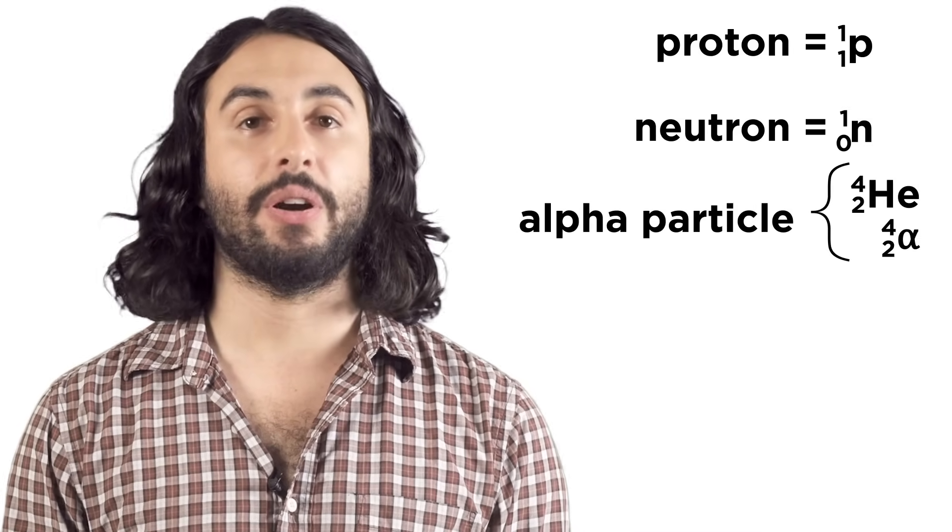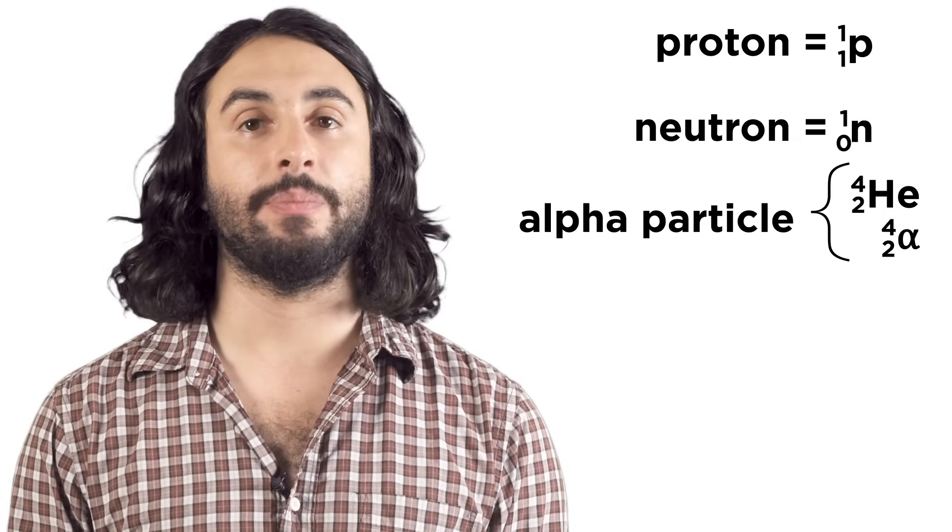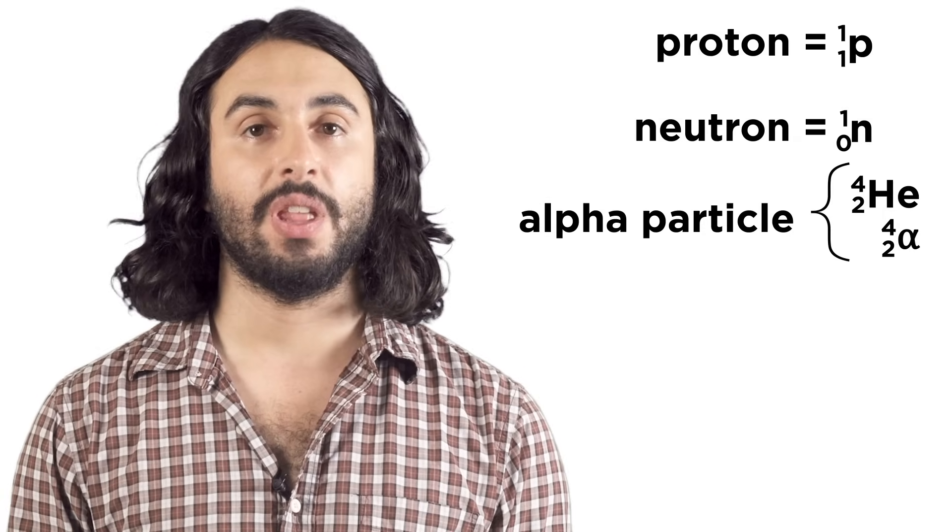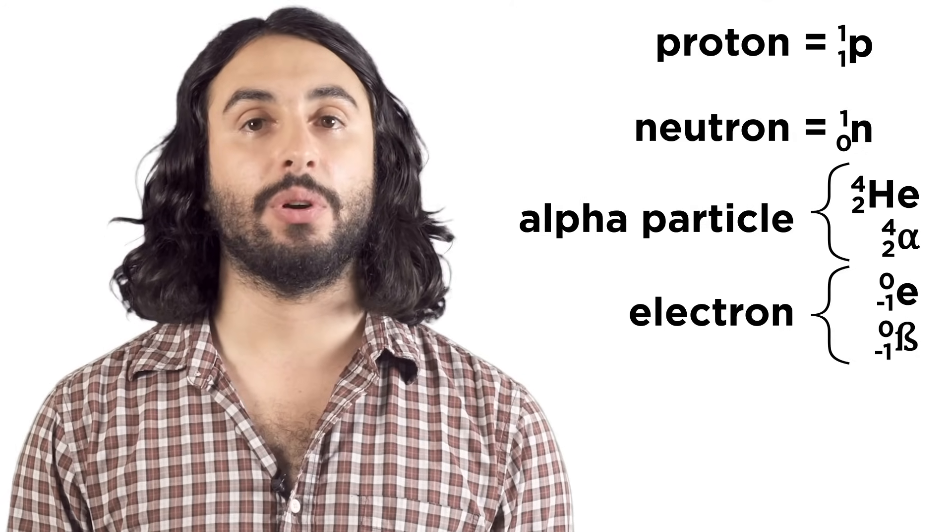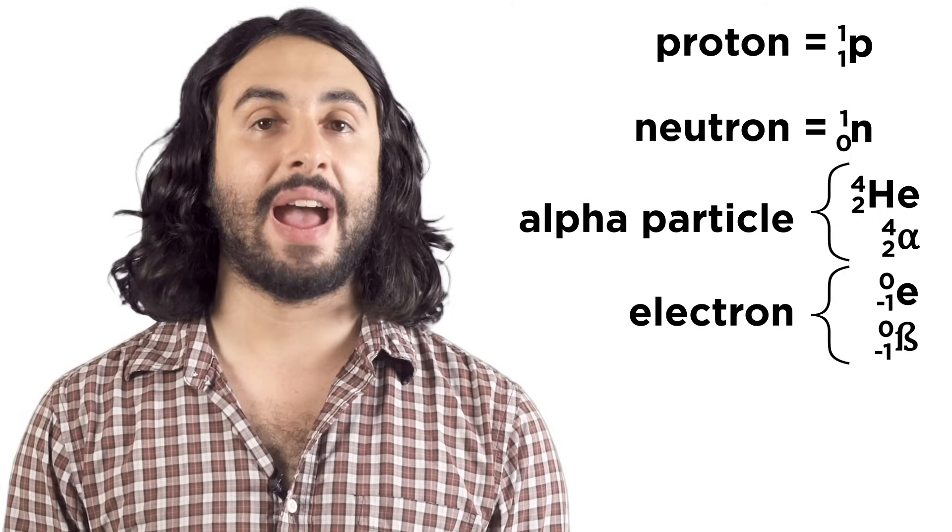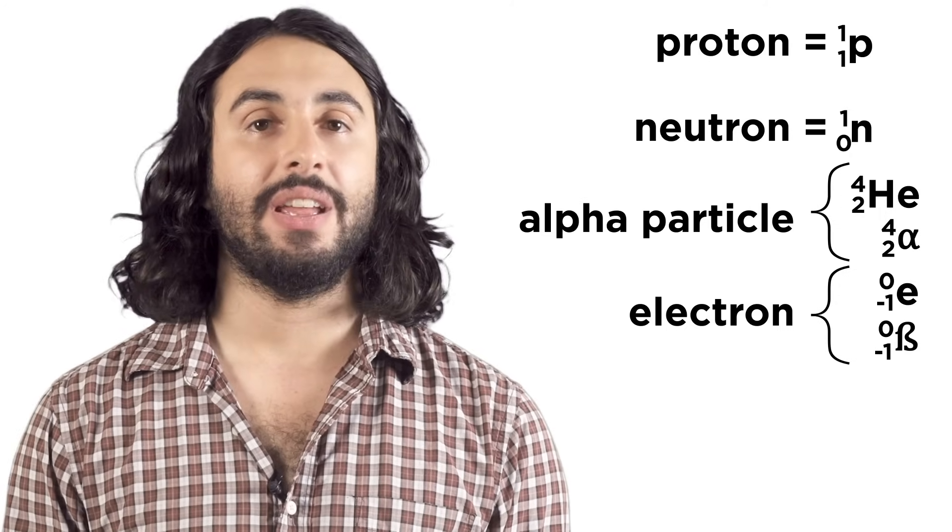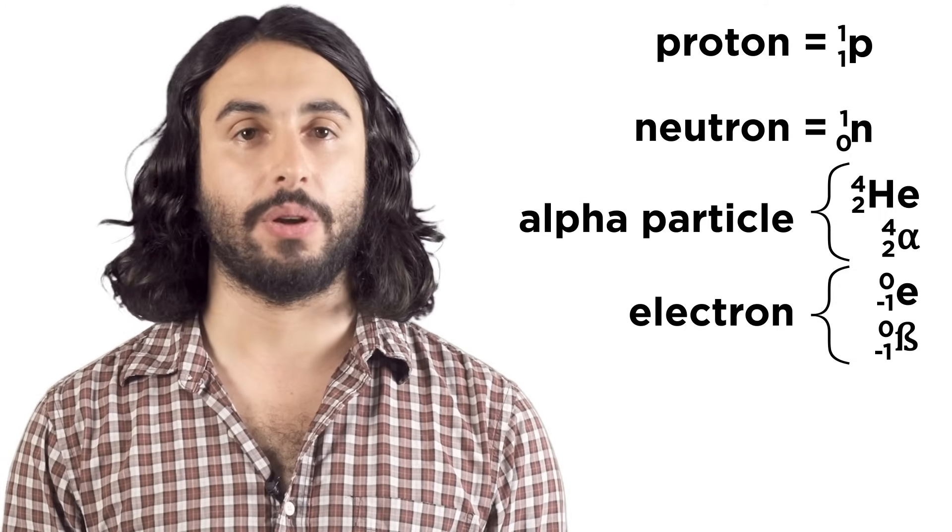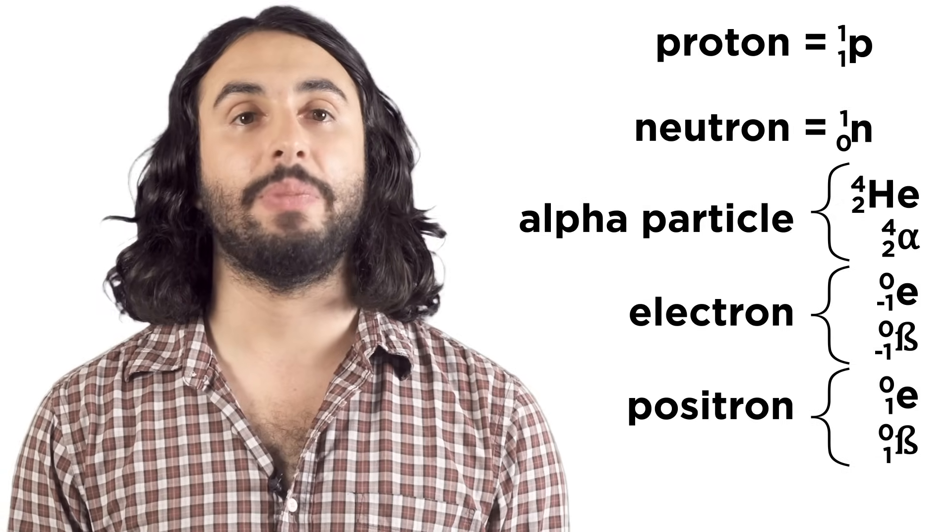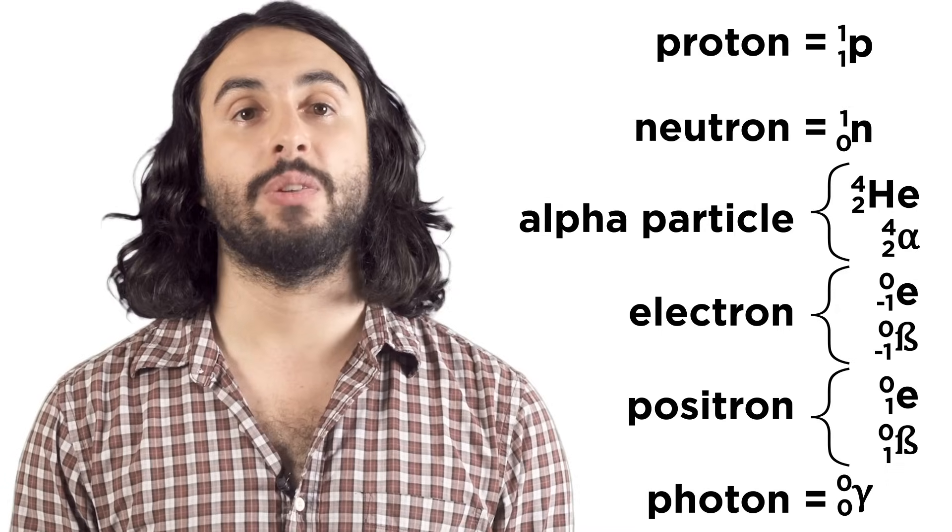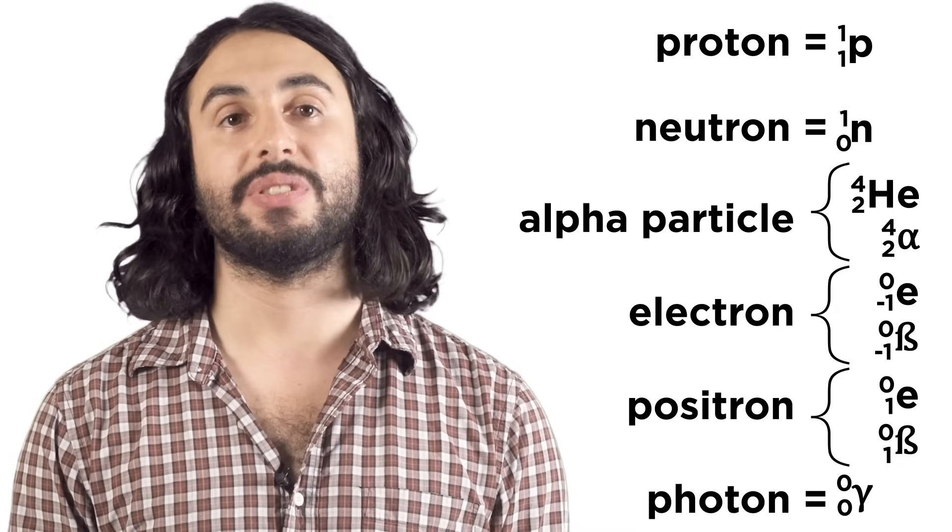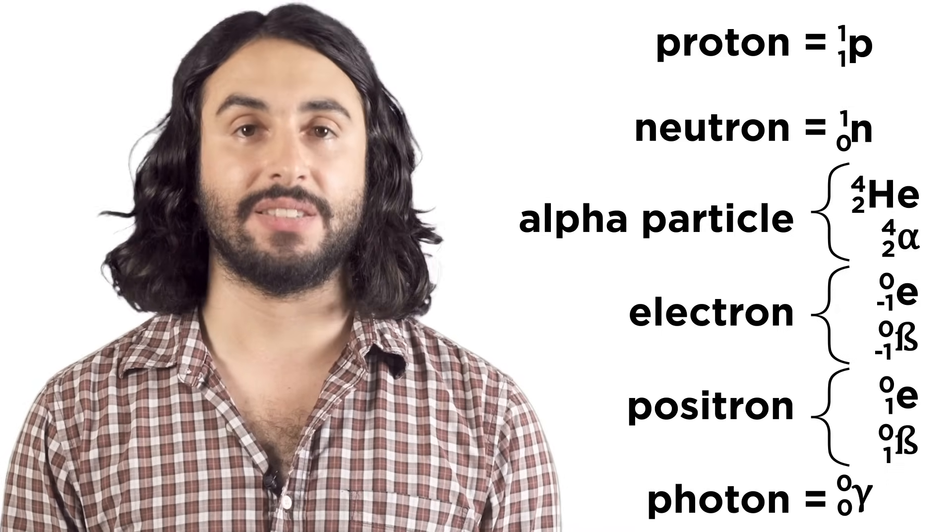An alpha particle can be represented as helium or with the alpha symbol. An electron can be either an e or a beta symbol, and the atomic number will be negative one, while the mass, though technically not zero, is negligible so we call it zero. A positron will be the same but with a positive one here. And a photon will be gamma, both numbers zero, as it legitimately has zero mass.